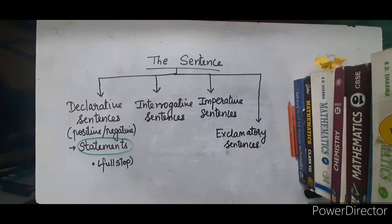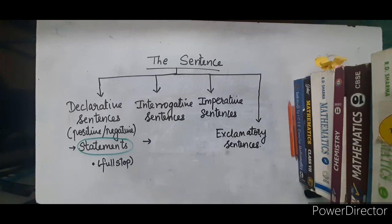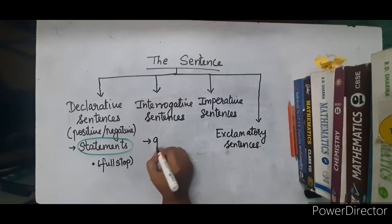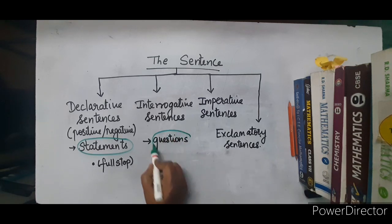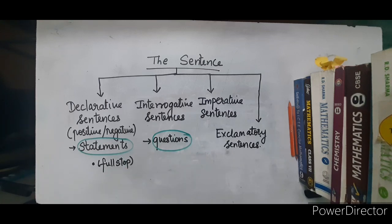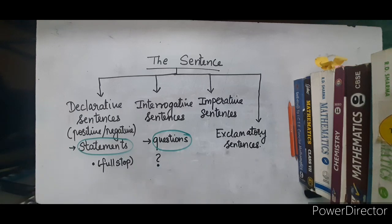Now when we talk about interrogative sentences, the simpler name to understand an interrogative sentence would be questions. They will be in the form of questions. Normally the end punctuation mark here will be a question mark.